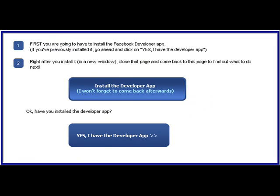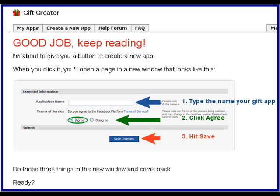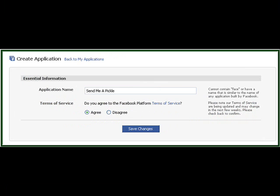Go back to the original page. You've installed the Developer, so you click that. You're going to be jumping from page to page, that's why you want to keep them all open. Keep reading and definitely read. Type the name of your gift app, click I Agree, and then click Save. All of this is very easy as long as you keep the tabs open and read what it says.